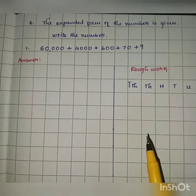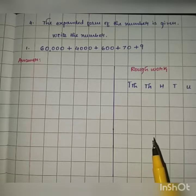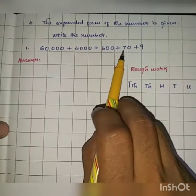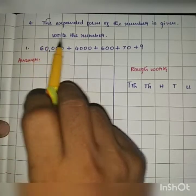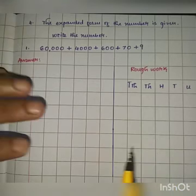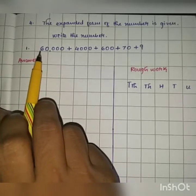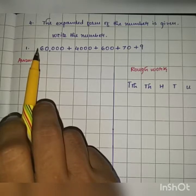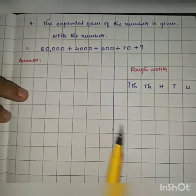In this video we are going to discuss problem set number five, question number four. The expanded form of a number is given and we need to write the standard number. For example: sixty thousand plus four thousand plus six hundred plus seventy plus nine. Expanded form basically means rewriting the place value of each digit present in that number — sixty thousand, four thousand, six hundred, seventy, and nine are all place values.